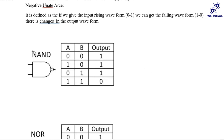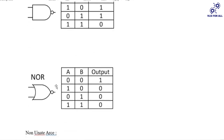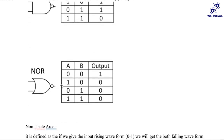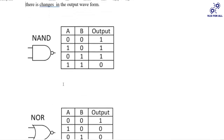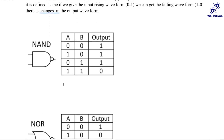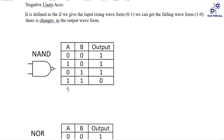NOR gate and NAND gate are the examples for negative unate arc.